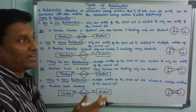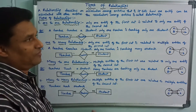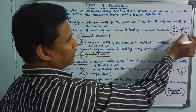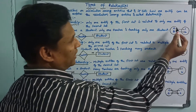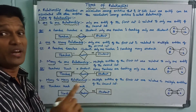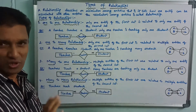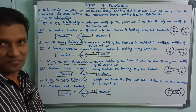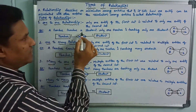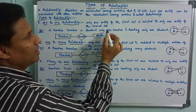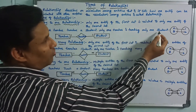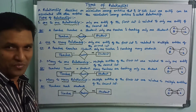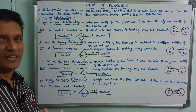If you understand that, it is easy to understand. For example, consider Student entity A and entity B — only a one-to-one relationship. One small example: a teacher teaches a student. Only one teacher is teaching only one student. One teacher, one student — that is a one-to-one relationship.